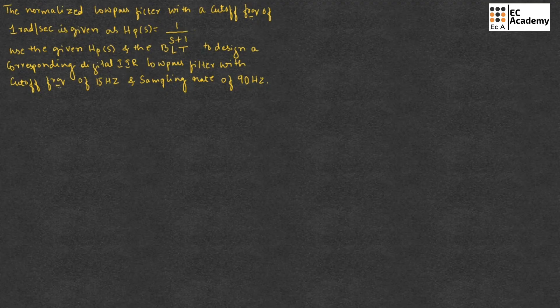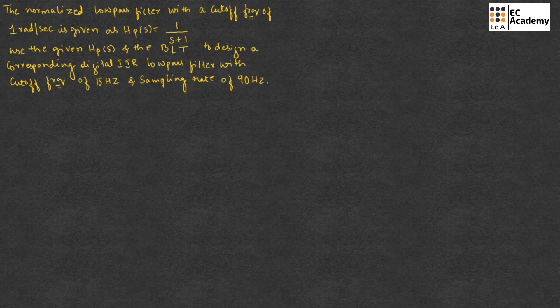Here a problem is given. The normalized low-pass filter with a cutoff frequency of 1 radian per second is given as H_P(S) equal to 1 divided by (S + 1). We need to use the given H_P(S) and the bilinear transformation to design a corresponding digital IIR low-pass filter with cutoff frequency 15 Hz and sampling rate of 90 Hz.